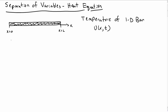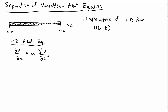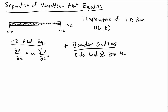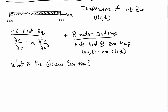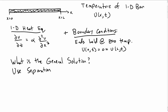Let's look into applying the idea of separation of variables to the heat equation. We'll consider the temperature of a 1D bar. The heat equation is du/dt, where u is the temperature, equal to alpha times the second partial derivative of u with respect to x. We add boundary conditions: the ends of the bar are held at zero temperature, so at x = 0 and x = L, the temperature equals zero. The question is: what is the general solution to this differential equation with boundary conditions? We'll use the technique of separation of variables.